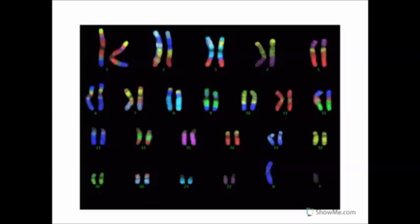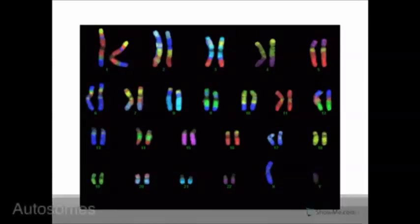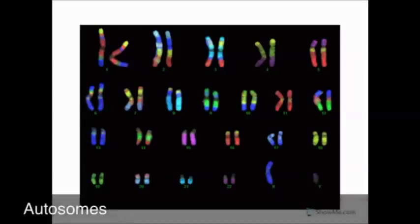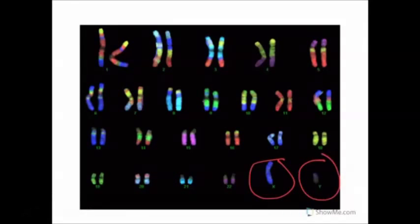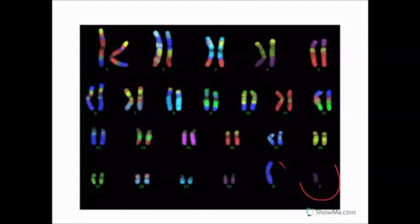The first 22 pairs of chromosomes are called autosomes. The two that are left are called sex chromosomes. So if you're a boy, these are the X and the Y, or if you're a girl, these are the XX.